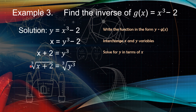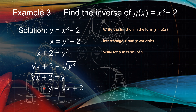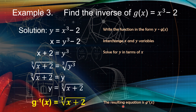Taking the cube root of both sides: cube root of y cubed cancels the cube and the index 3, leaving y. So y equals cube root of x plus 2. The last step is the resulting equation becomes the inverse: g⁻¹(x) equals cube root of x plus 2.